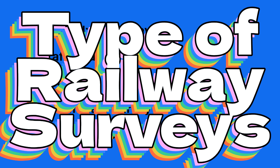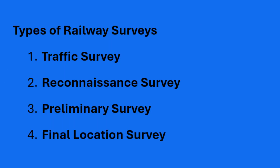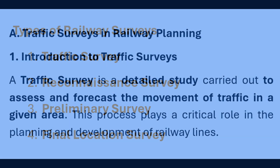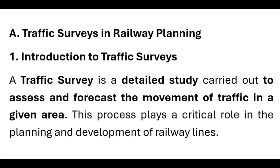Hello everyone. Today we'll take a comprehensive look at the four major types of railway surveys used in planning and constructing railway lines. These include: 1. Traffic Survey, 2. Reconnaissance Survey, 3. Preliminary Survey, 4. Final Location Survey. Let us begin by understanding what a traffic survey is.